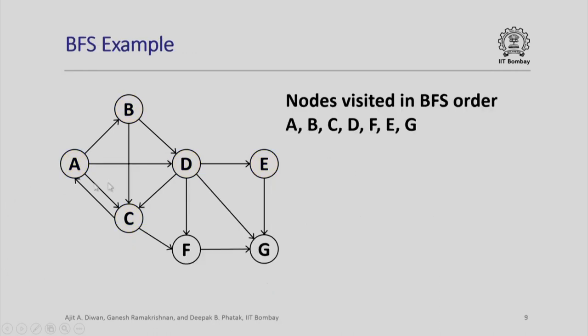Here is another complex example which we had shown earlier also. Again, I request you to follow the BFS algorithm and the demonstration and confirm that the nodes which get visited in the breadth first search order are A, B, C, D, E, F, G instead of the other order that we saw in the depth first search.